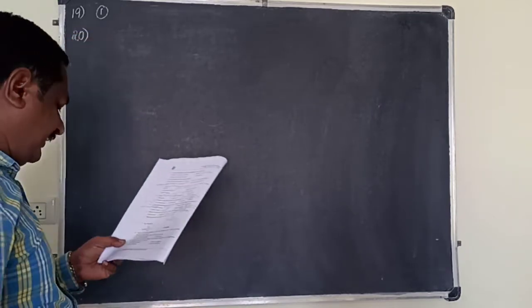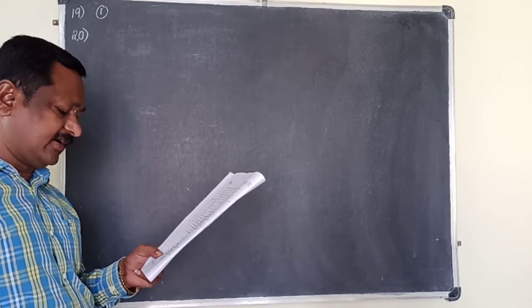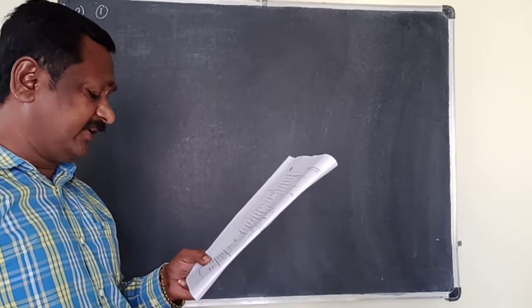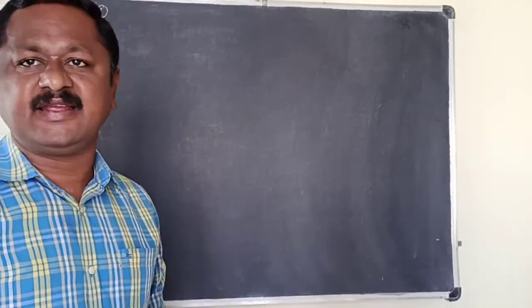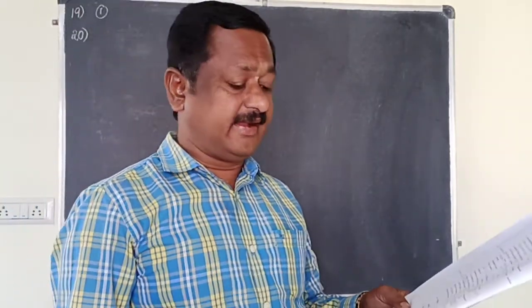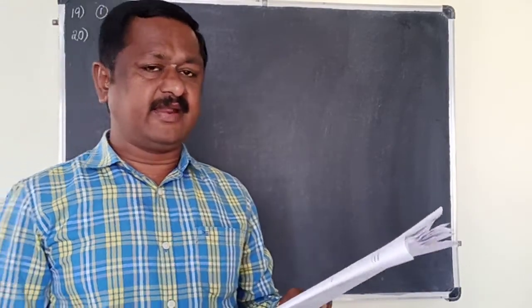Question number 20. When molecules of acetaldehyde condenses with another dissimilar molecule in presence of dilute alkali. One acetaldehyde, this is aldehyde, another molecule, another dissimilar molecule, this is aldehyde.